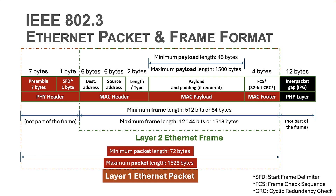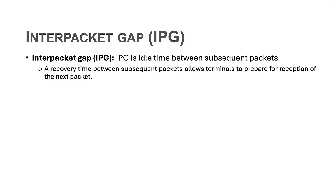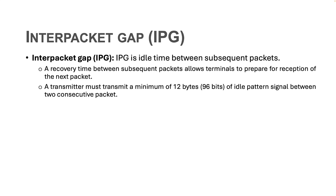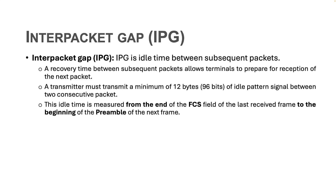Which brings us to the last part we have not tackled so far, which is the inter-packet gap or IPG. The inter-packet gap is the idle time between subsequent Ethernet packets. A brief recovery time between packets allows terminals to prepare for reception of the next packet. Towards this aim, an Ethernet-based transmitting node must transmit a minimum of 12 bytes or 96 bits of idle pattern signal between two subsequent packets. This idle time is measured from the end of the FCS field of the last received frame to the beginning of the preamble of the next frame.